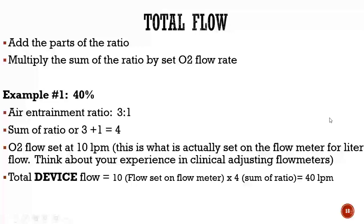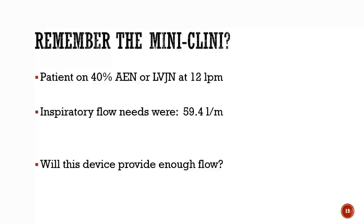Going back to that mini clinic: the patient's inspiratory flow needs were 59.4 liters per minute. They were on a 40% air entrainment nebulizer at 12 liters. We know 40% is a 3-to-1 ratio, so the sum is 4. Multiply 4 by 12: total device output is 48 liters per minute.